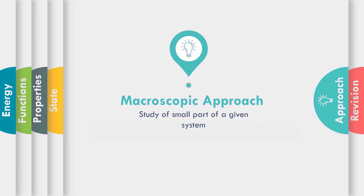In order to understand microscopic and macroscopic approach, let us take an example of our class. If we have to pass a judgment regarding a particular class, then according to microscopic approach I need to study the behavior of each and every student, and after that I can pass a judgment regarding the behavior of the class. Instead of studying every student, if I select a specific group and study their behavior, then based on that group's behavior I pass a judgment about the whole class.